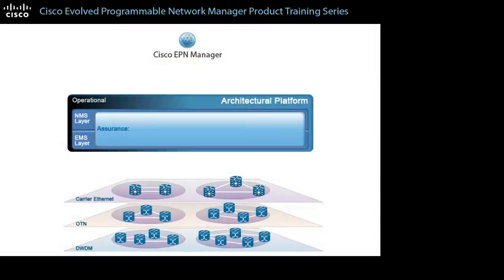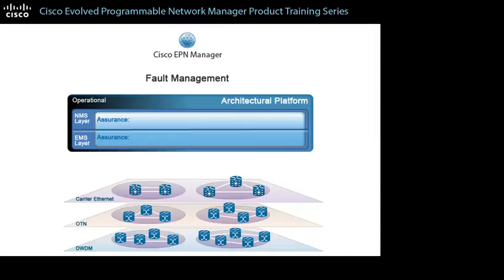Assurance functions occur in the EMS and NMS layers to provide fault management and to collect performance metrics. To support fault management activities, the Assurance function in the EMS layer receives events in such notifications as syslogs or traps that the devices are reporting, and then identifies the conditions of the events and their locations. It then generates alarms containing the identified conditions and locations to alert users of network or system changes that might need more attention.